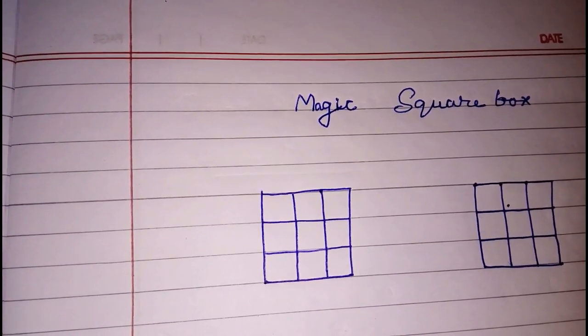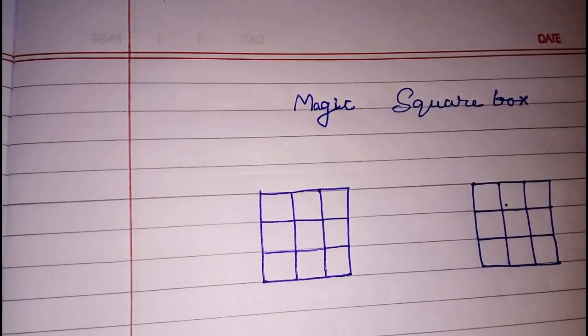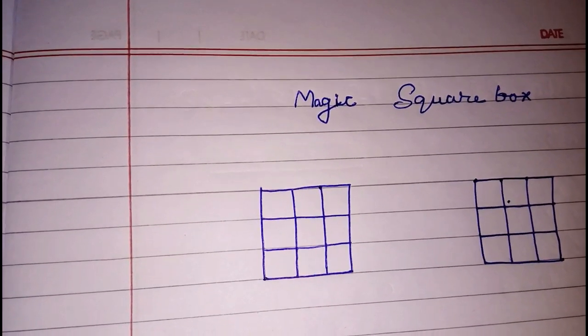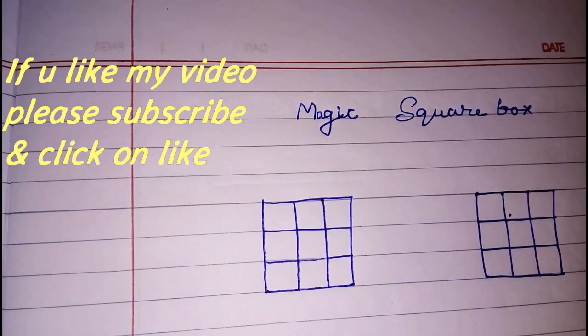If you say we will take 15 to 15, 16, 17, 18, 19, 20, 21, 22, 23, up to 23.